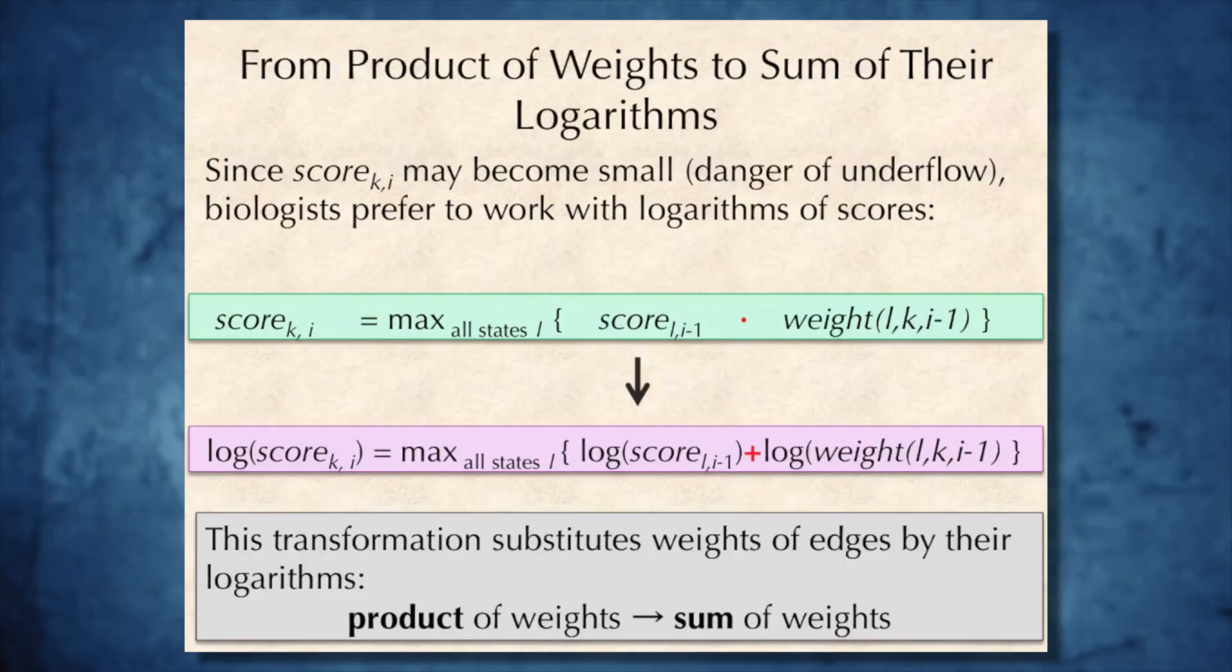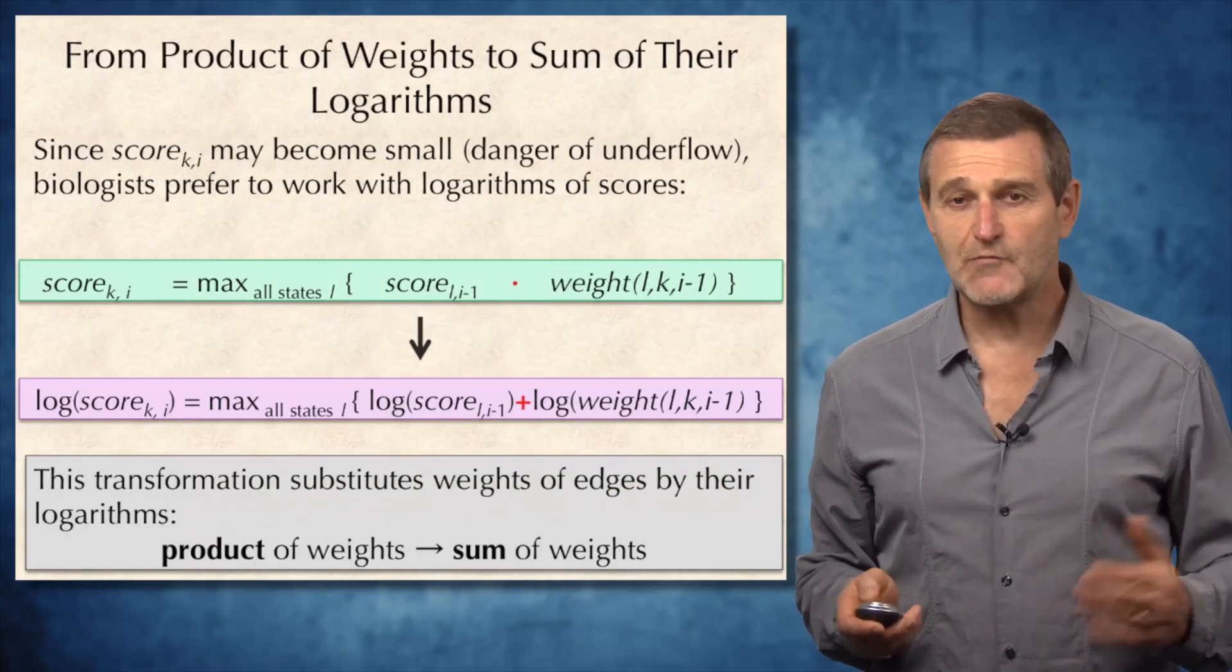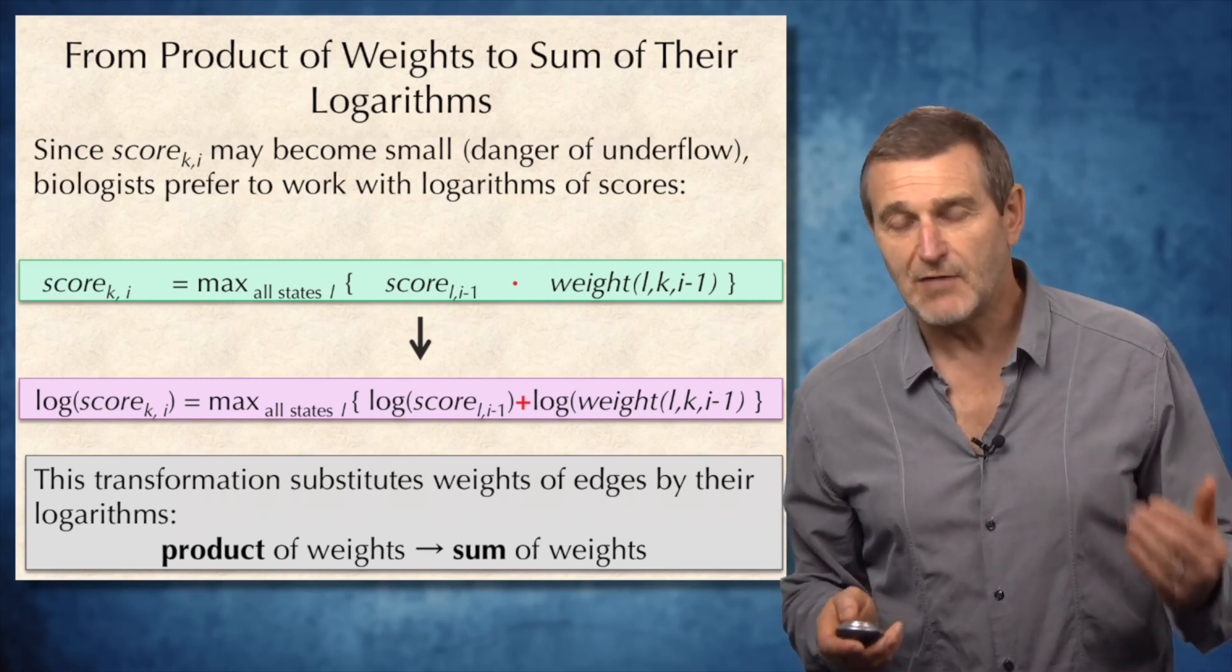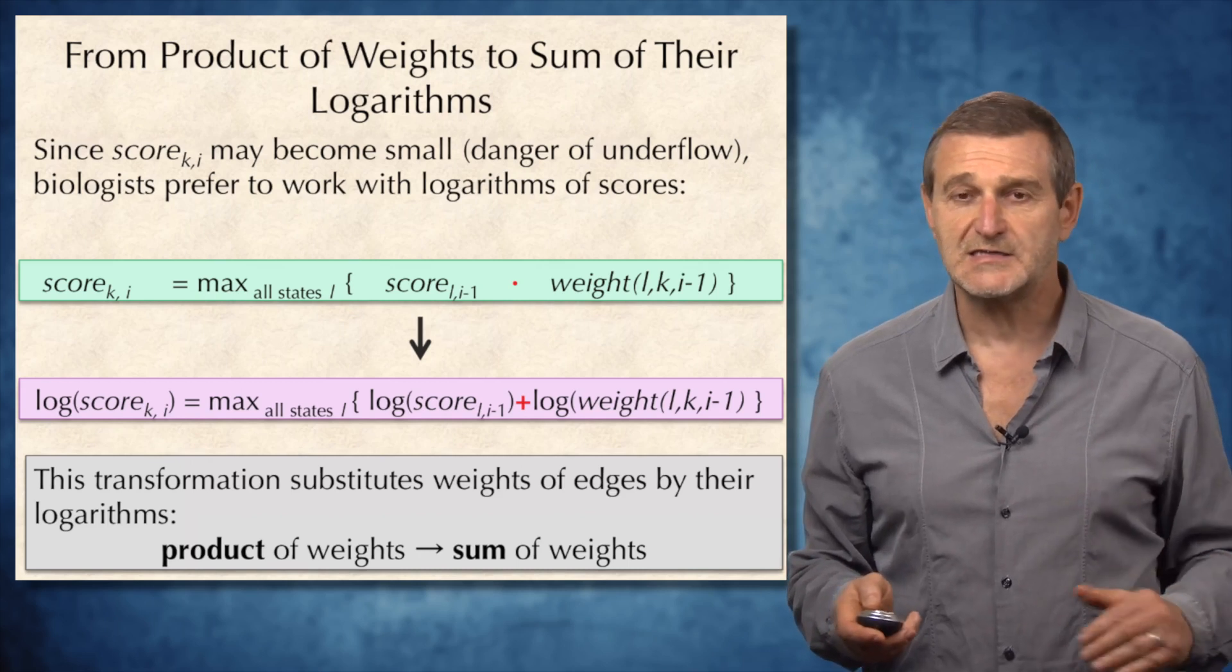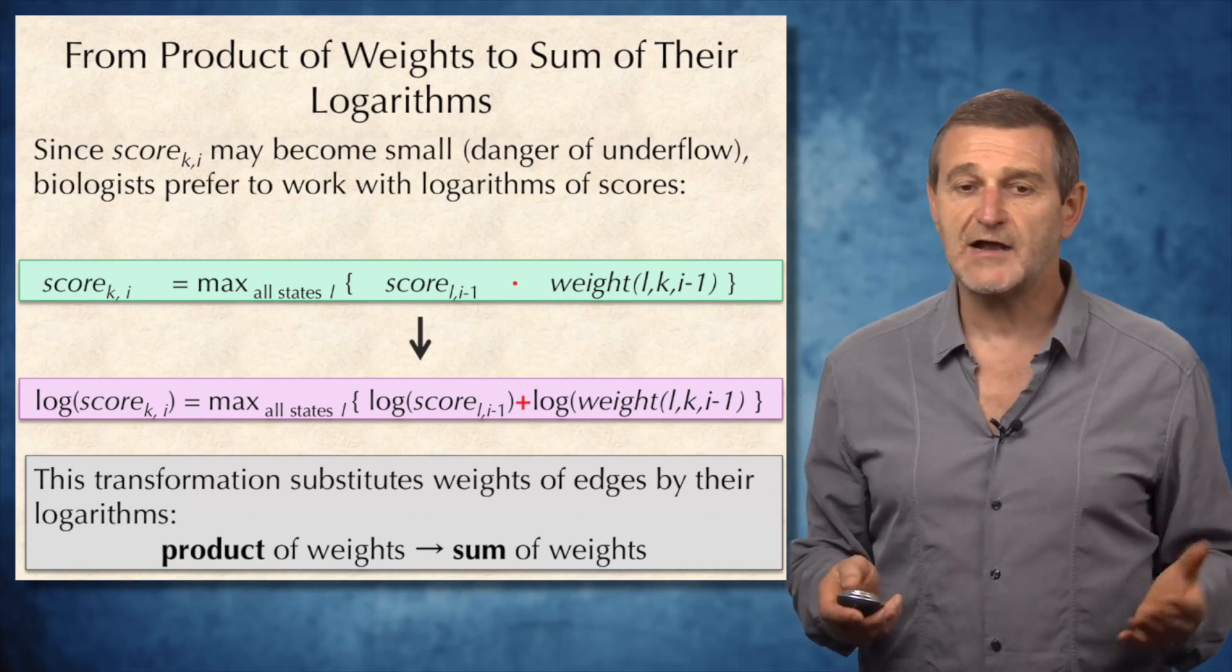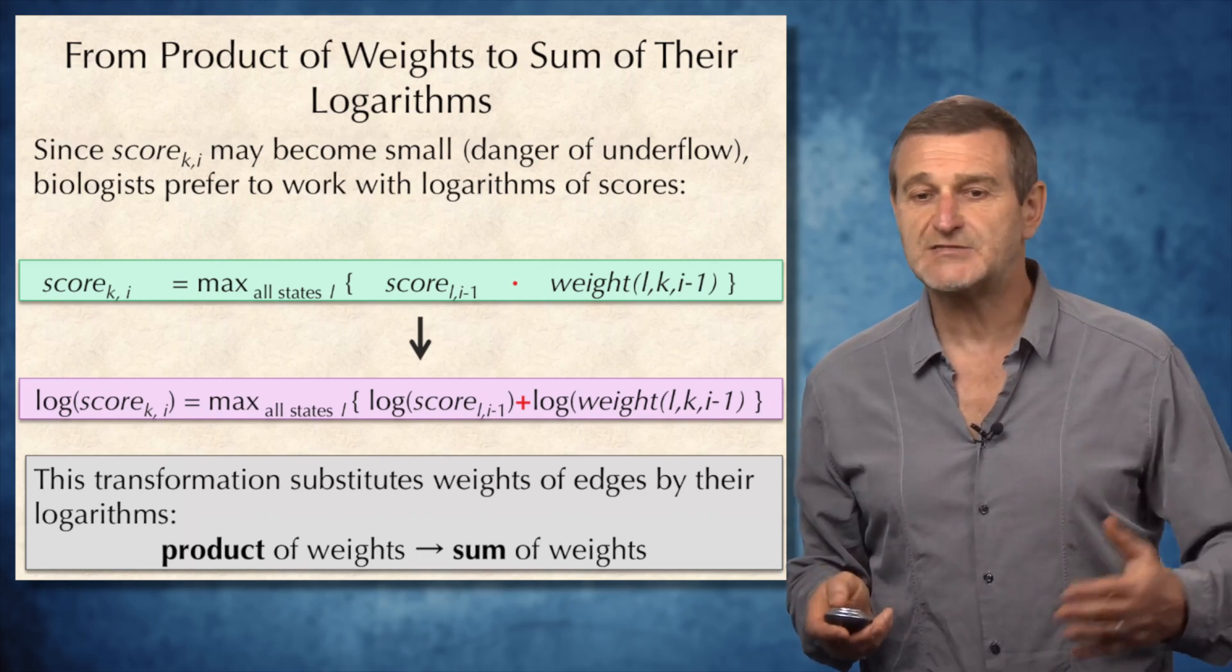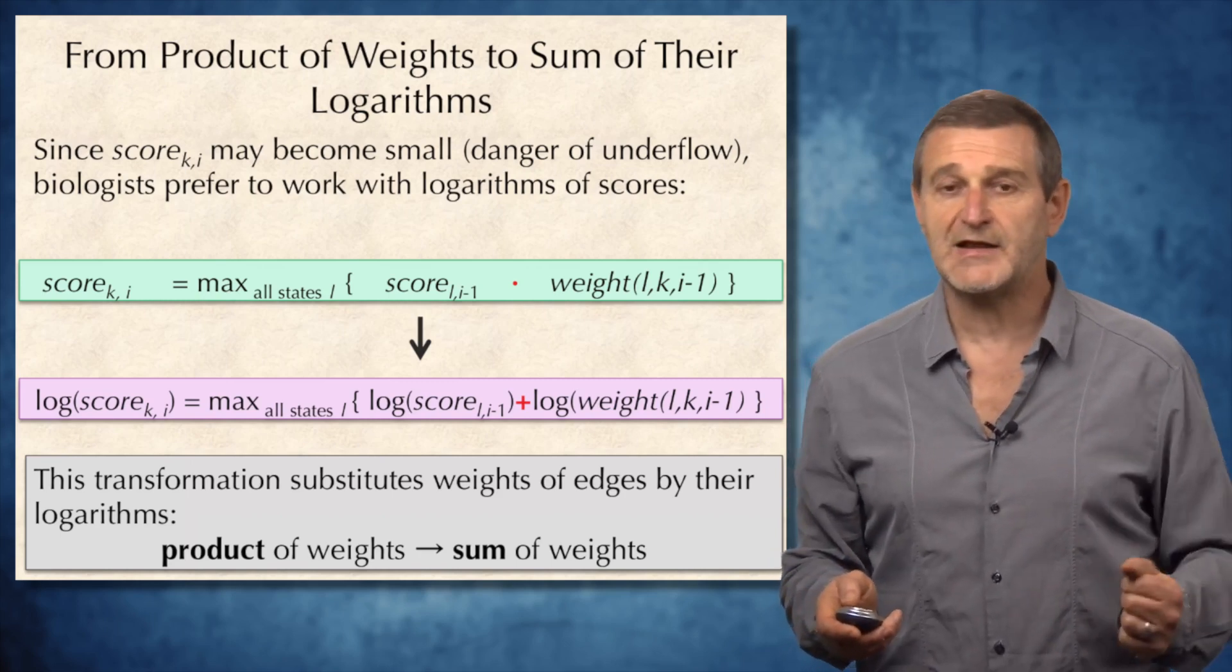You, of course, notice that if in the past we were maximizing the sum of weights of edges in a path in a graph, now we maximize the product of edges for a path in the graph. And when we maximize the product, there is a danger of overflow. Therefore, bioinformaticians prefer to work with logarithms of scores. So, if you transform the recurrence for the score_k,i by taking its logarithms, then the recurrence corresponding to the product of weights is transformed into the sum of weights, and this transformation substitutes the weight of edges by the logarithms and transforms the product of weights into familiar sum of weights.